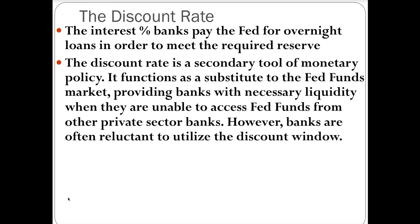The discount rate is actually a secondary tool of monetary policy. It functions as a substitute to the Federal funds market, which is the market at which banks lend to each other — at what's called the Federal funds rate. So the Federal funds rate is the rate at which banks lend to each other, while the discount rate is what banks pay when borrowing from the Federal Reserve. The discount rate does provide banks with necessary liquidity when they aren't able to access Federal funds from other private sector banks.